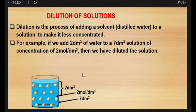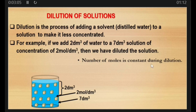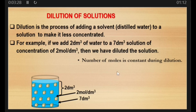The key concept to know is that the number of moles is constant during dilution. The number of moles before dilution must be equal to the number of moles after dilution. So we say n_i, which represents the initial number of moles, is equal to n_f, which stands for the final number of moles.